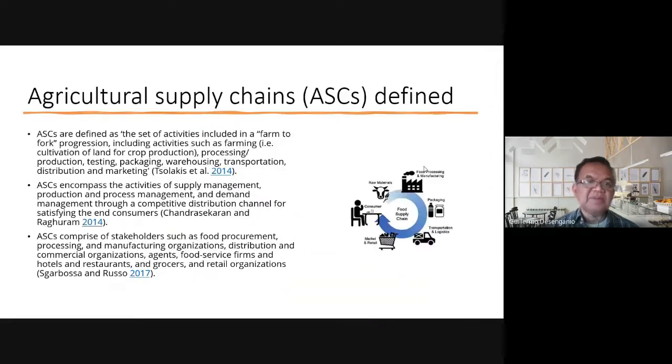Agricultural supply chain or ASC is actually defined by several experts. According to Chorlakis and others, ASCs are defined as the set of activities included in a farm-to-port progression, including activities such as farming, where there is cultivation of land for crop production, processing, production, testing, packaging, warehousing, transportation, distribution, and marketing.